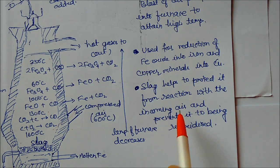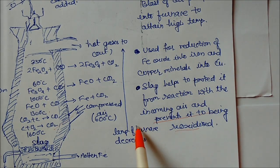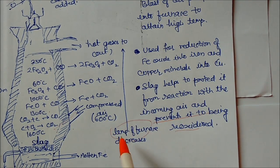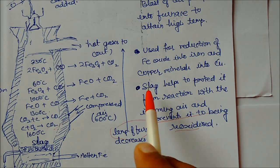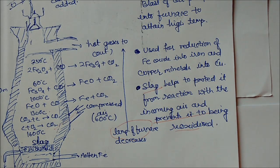What is slag? Slag helps to protect it from reactions with the incoming air and it prevents it from being re-oxidized. This is the temperature of the furnace which is in decreasing order. This is the function of slag and this is the reduction of iron oxides.